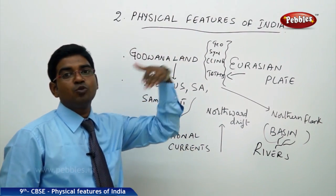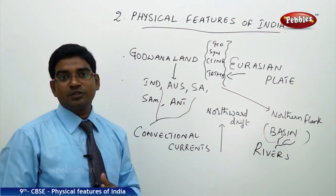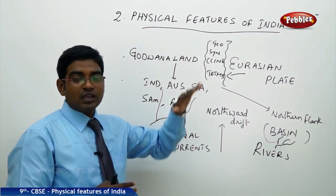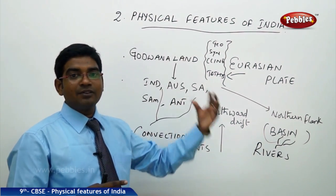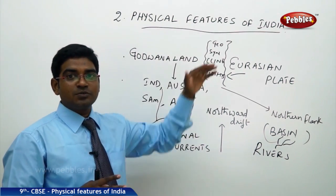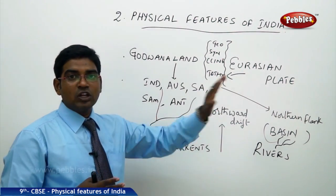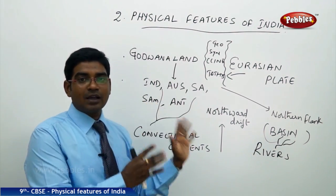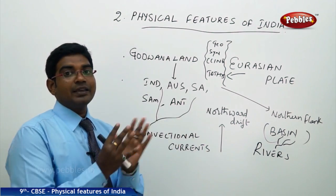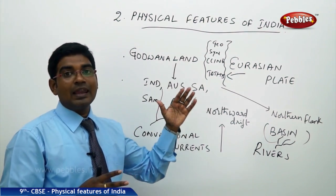As the Himalayas were being formed and the land moved toward the Eurasian plate, a large basin was formed on the northern flank of the Gondwana land. This large basin was filled with deposits brought by rivers originating from the Himalayan region, depositing fertile soil through the erosion process. This resulted from the movement of the Gondwana and Eurasian plates compressing the Tethys sea and its sedimentary rocks.